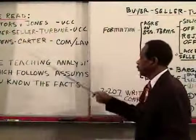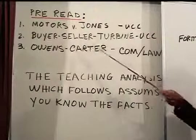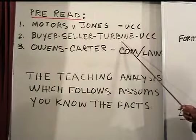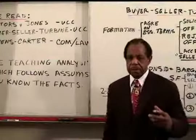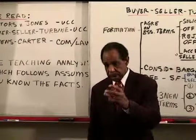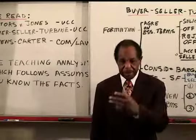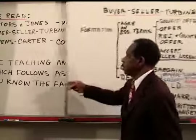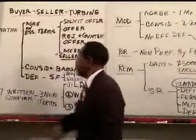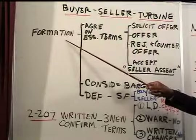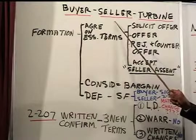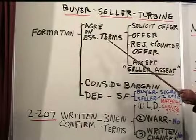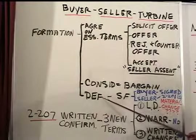We're now going to go through the analysis of the biosellular turbine problem. We've analyzed various parts of it, but I want to do a quick summary so that you can see the integrated solution to the problem, how you organize it, and what you would say in certain places. In the biosellular turbine problem, the first issue is formation: did buyer and seller form a contract? Formation of a contract requires agreement on the central terms, consideration, and no effective defenses.